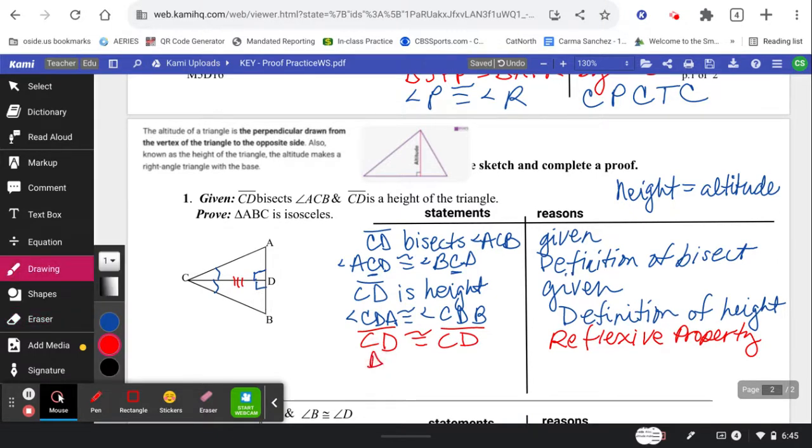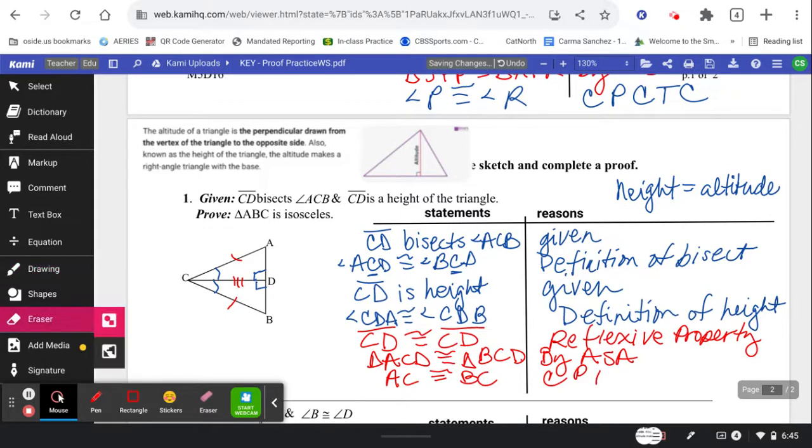So here we go. Triangle ACD is congruent to triangle BCD by angle side angle. Now I can say that side AC is congruent to side BC by corresponding parts of congruent triangles are congruent.